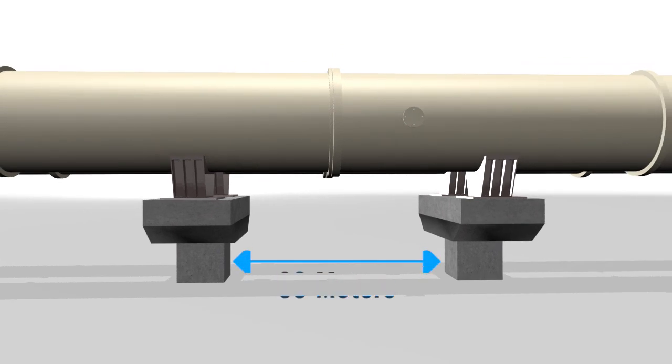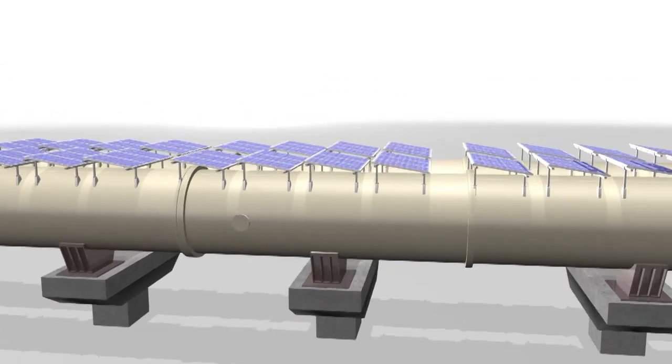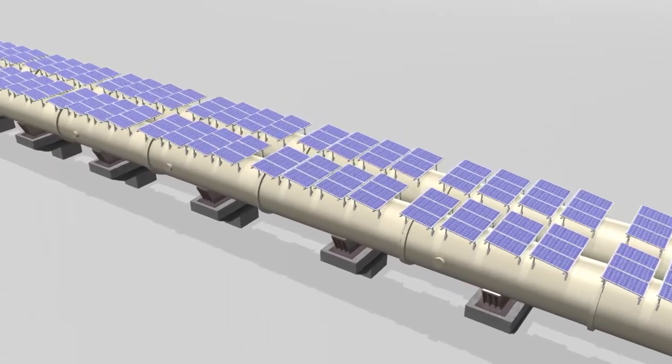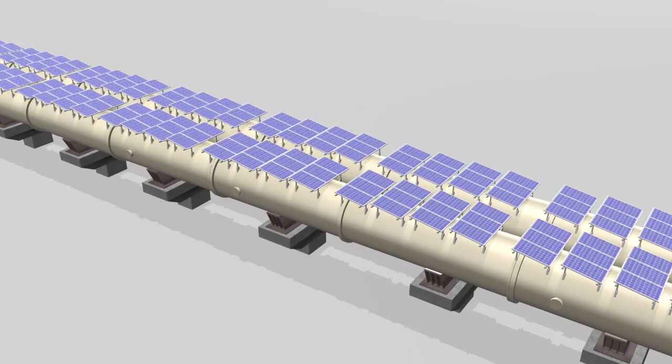The outer part of the tube will be covered with solar panels for renewable energy generation and provides power to the whole system, resulting in minimal cost of operation.